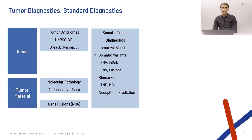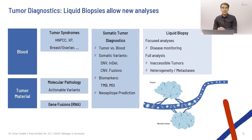Some years ago, another type of sample was added to this list, called liquid biopsies. The idea is that free-floating tumor DNA is extracted from a patient's bloodstream. This allows us to monitor disease recurrence, but also to analyze inaccessible tumors and look at tumor heterogeneity in patients with multiple metastases.